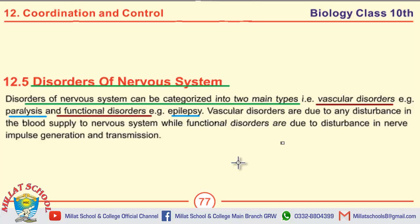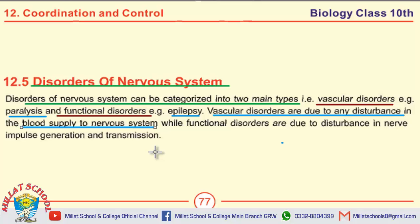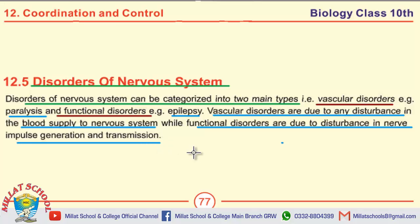Before discussing these two disorders, we will define vascular disorders. Vascular disorders are due to any disturbance in the blood supply to the nervous system. Functional disorders are due to disturbance in nerve impulse generation and transmission. This is the basic difference. They may ask the question in the form of: differentiate between vascular and functional disorders.